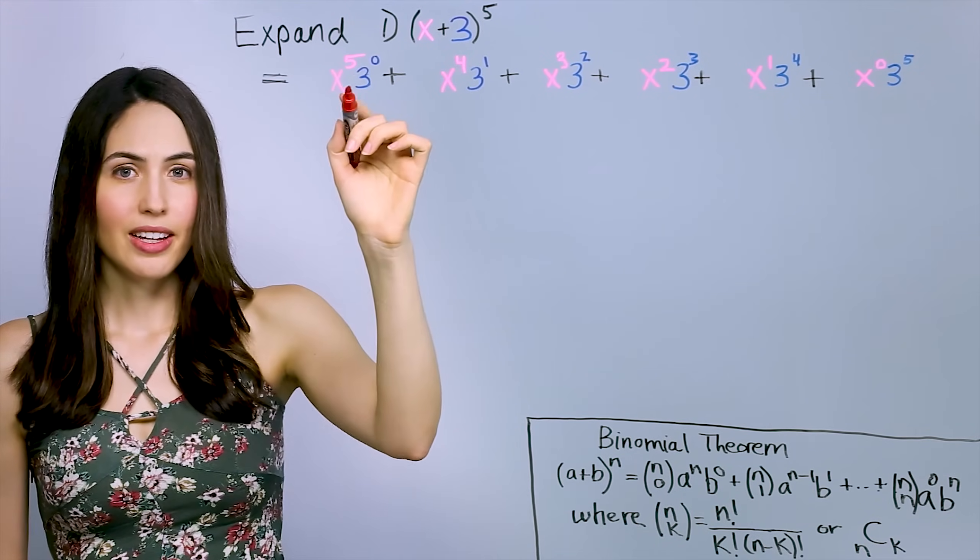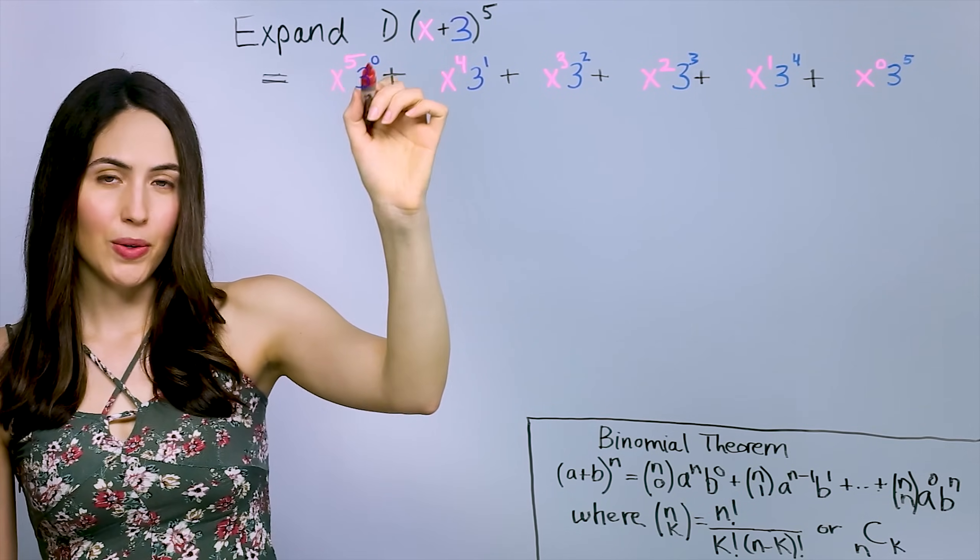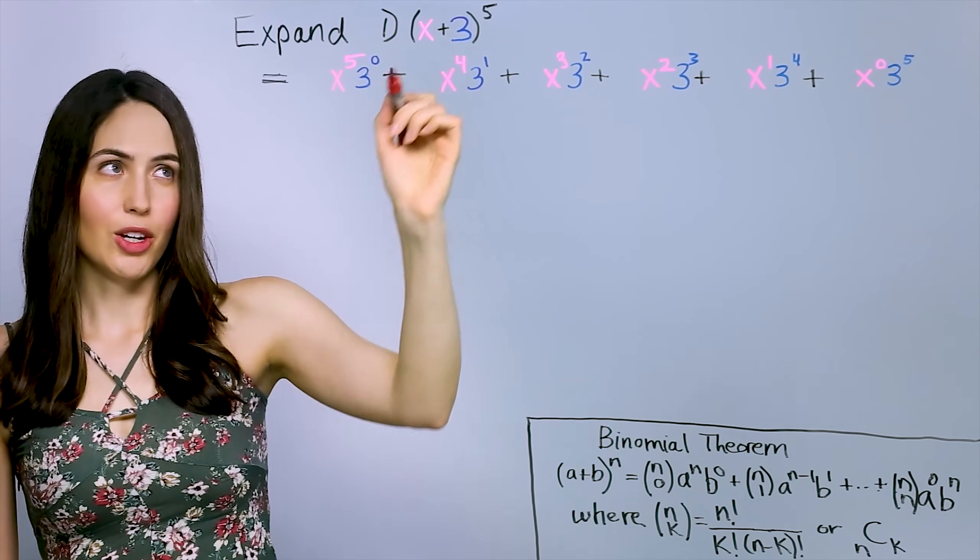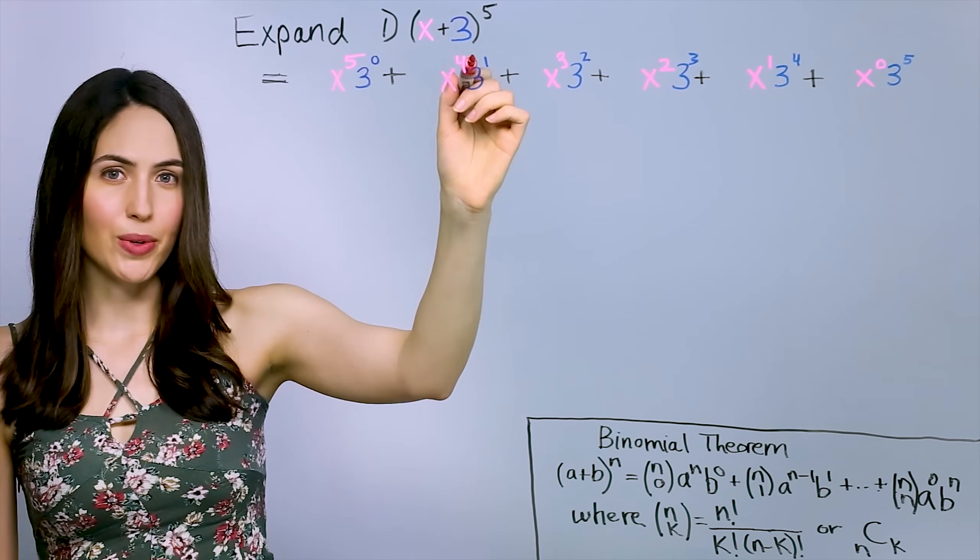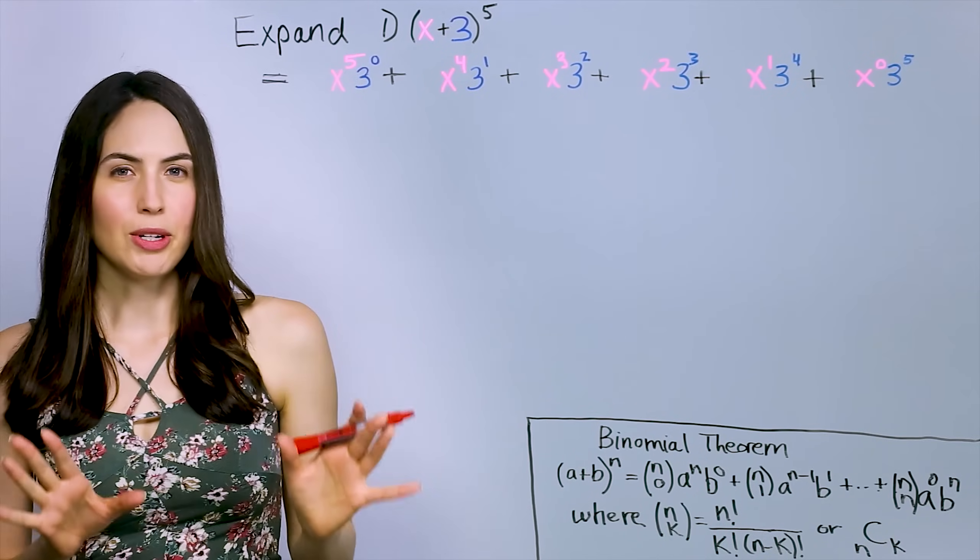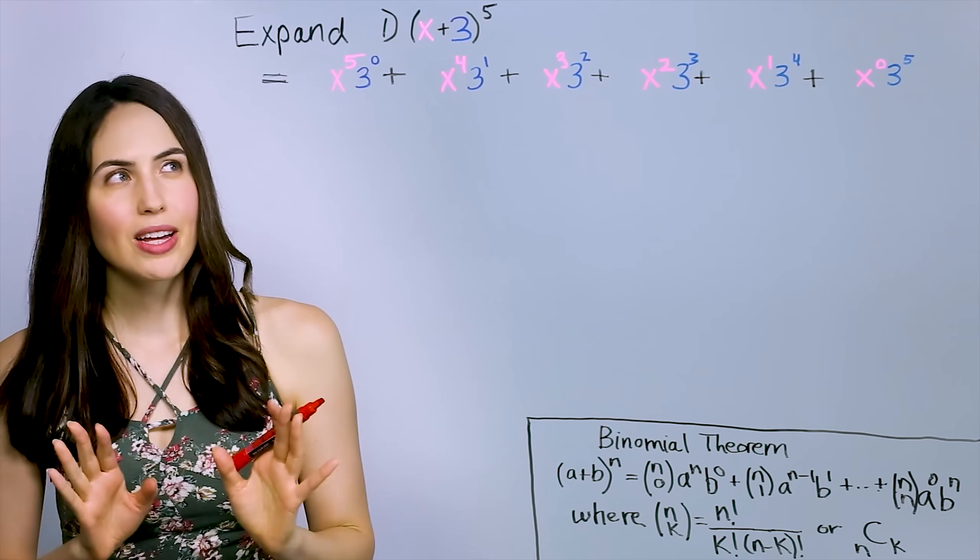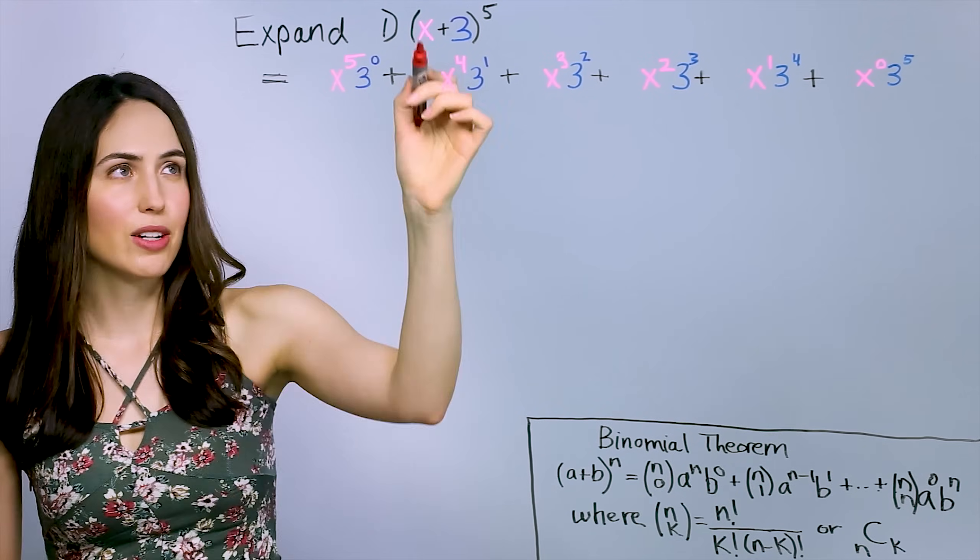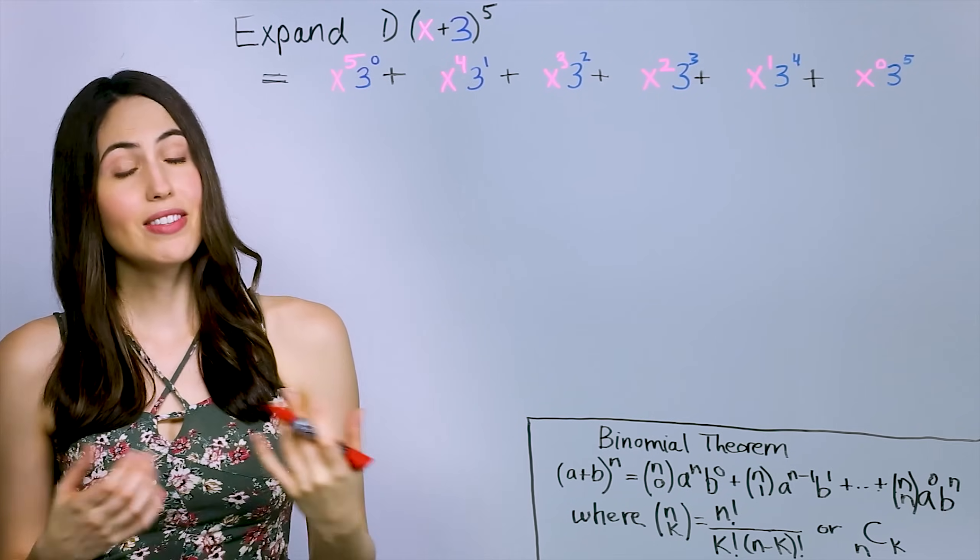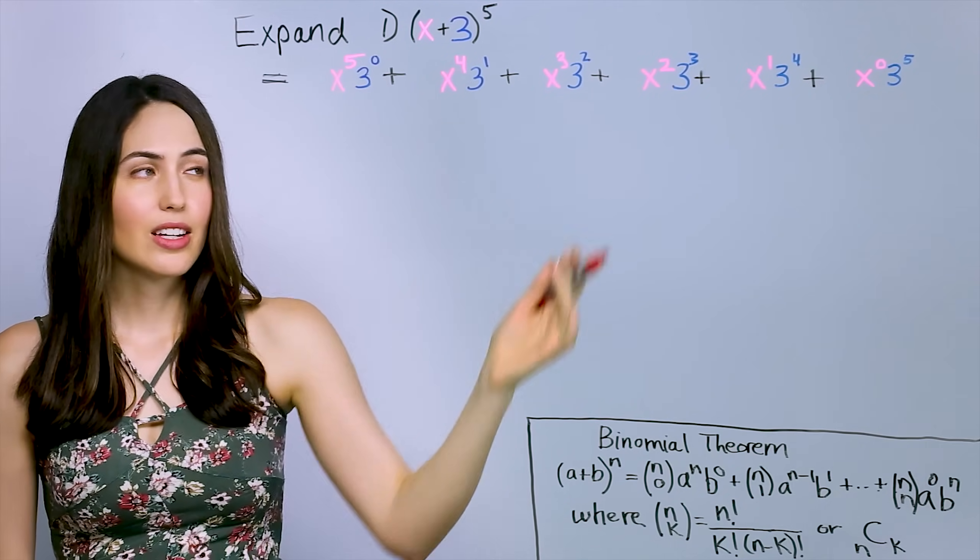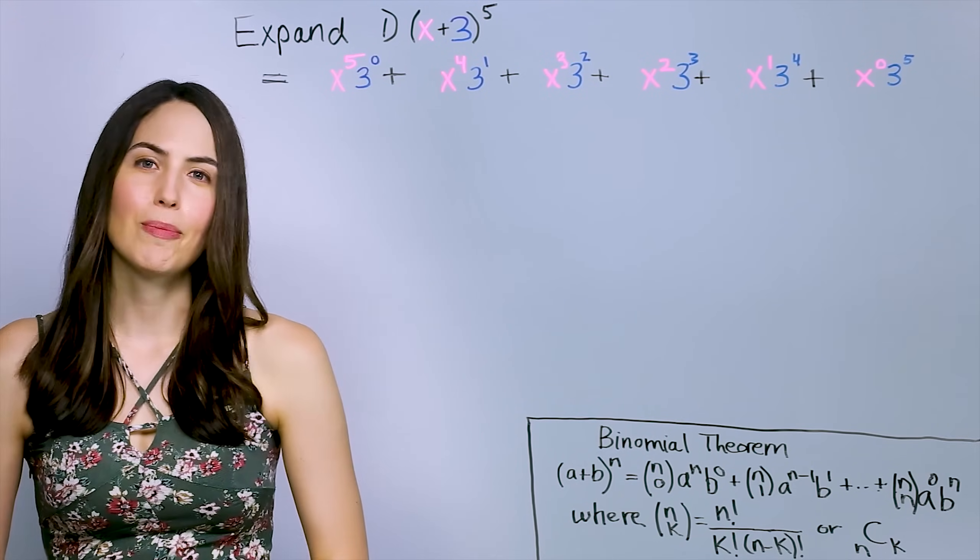Also, for each term, notice how if you add the powers, it's always going to add to your power number 5. Here, so 5 plus 0 is 5, 4 plus 1 is 5, 3 plus 2. It's always going to be true in these. And also, one thing, you might think that for an expansion raised to power of 5, that you would have 5 terms. You actually have 6 terms if you count them. It's just because we're doing the whole counting from 0 thing as one more term than you would think.